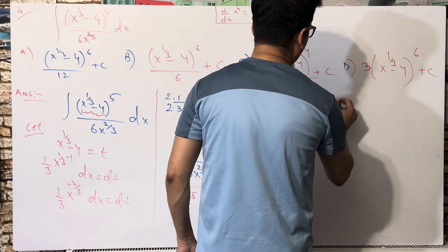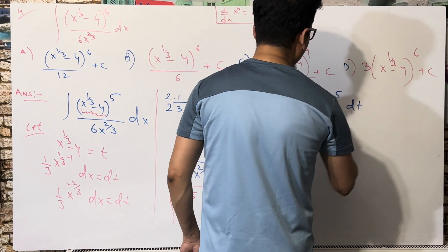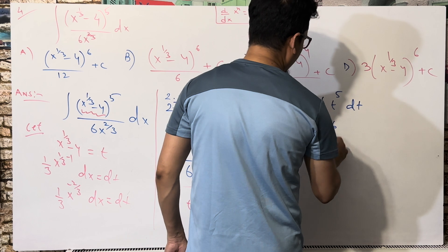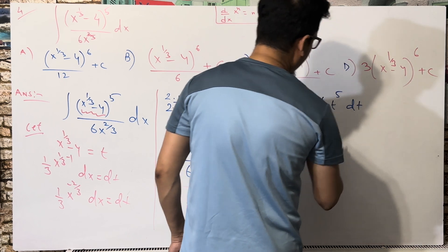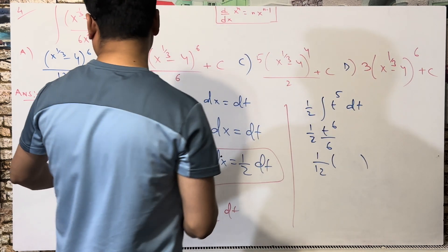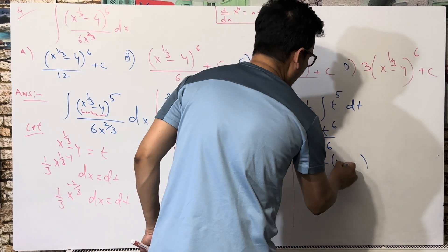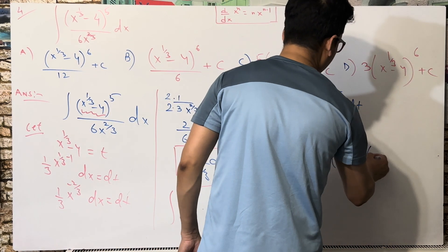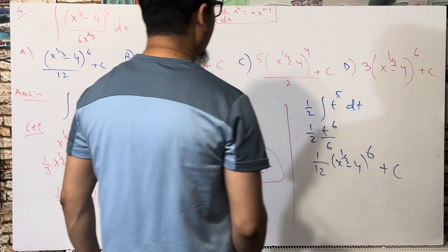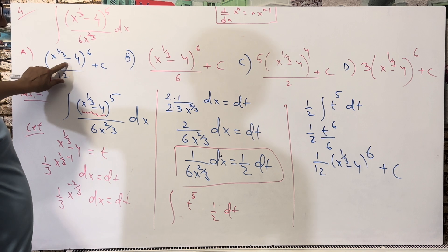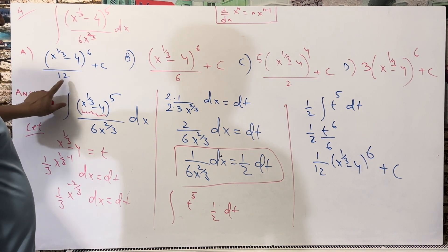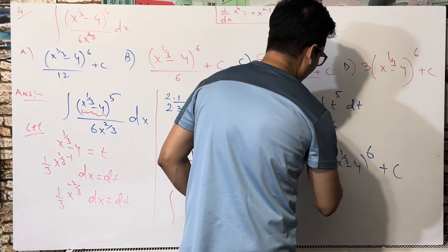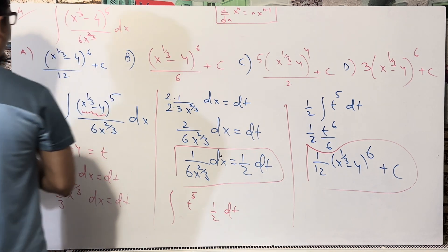Integrating t^5 gives t^6/6, so we have (1/2)·(t^6/6) = t^6/12. Substituting back, t = x^(1/3) minus 4, the final answer is (x^(1/3) minus 4)^6 divided by 12, plus C. So option A is correct.